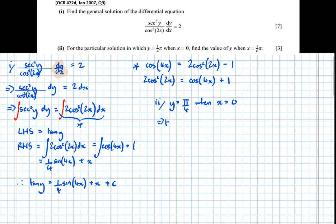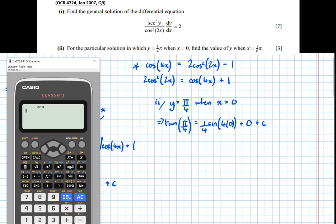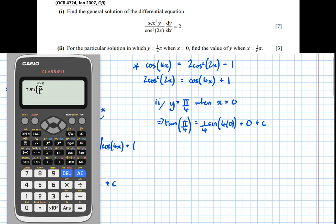So subbing it in, tan of pi over 4 equals a quarter sine of 4 lots of 0 plus 0 plus c. Then getting the calculator, we'll see that tan of pi over 4 is equal to 0.0137. So the mistake I've made there, the calculator is in degrees mode. It should be in radians.